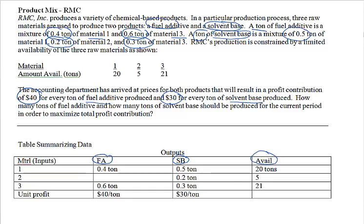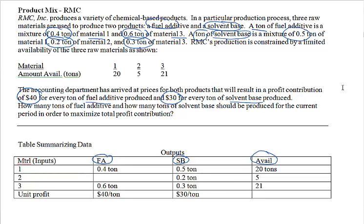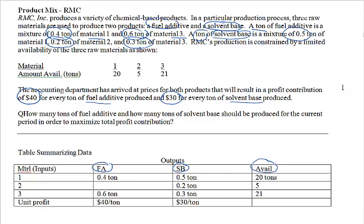So that's all the data given. Now, what is the question that is asked? It says here: how many tons of fuel additive and how many tons of solvent base should be produced for the current period in order to maximize the total profit contribution. So that is the question.